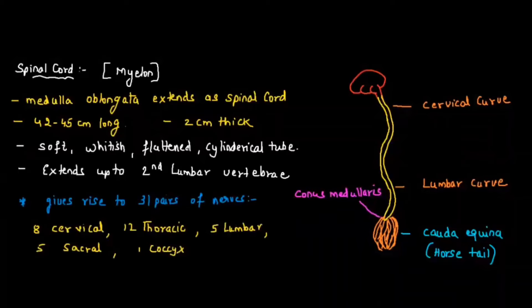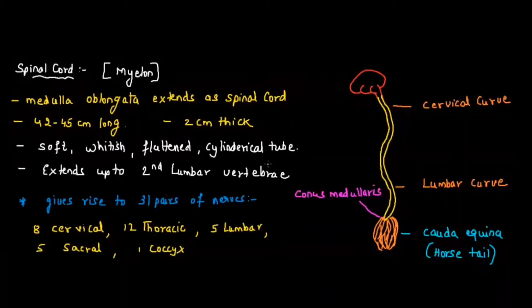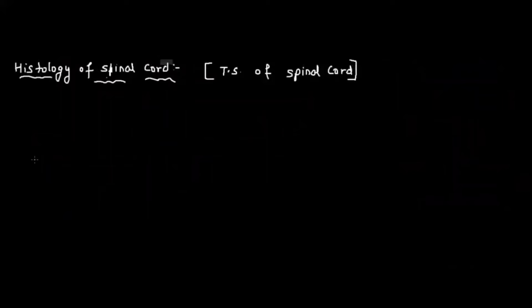Let's look at the transverse section (TS) of the spinal cord, which is also known as the histology of the spinal cord. If we cut the spinal cord to see what is present inside, we need to draw its diagram. Remember: the spinal cord is the extension of the medulla oblongata, 42 to 45 centimeters long, 2 centimeters thick, with cervical and lumbar curves forming an S-shape. The end is the conus medullaris, giving rise to the cauda equina.